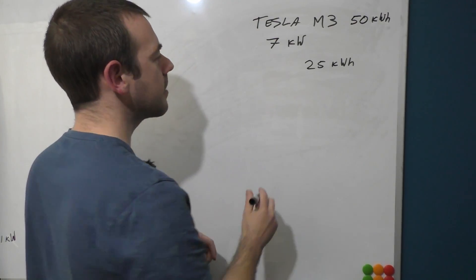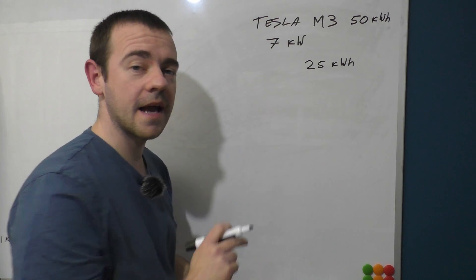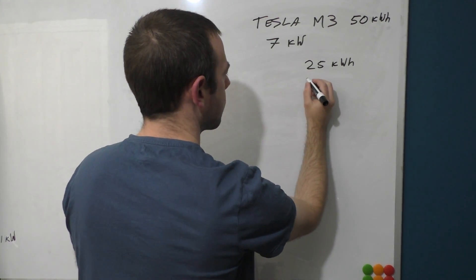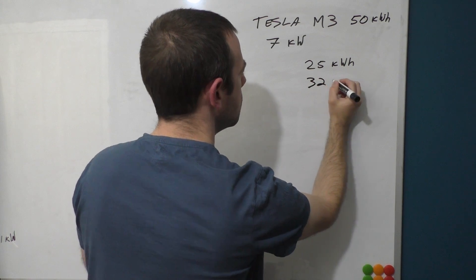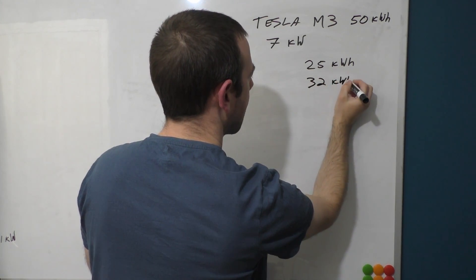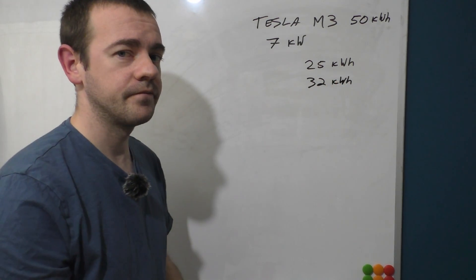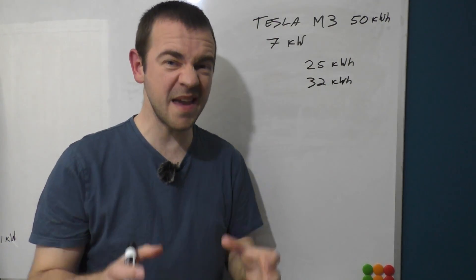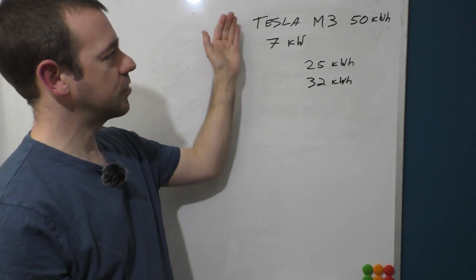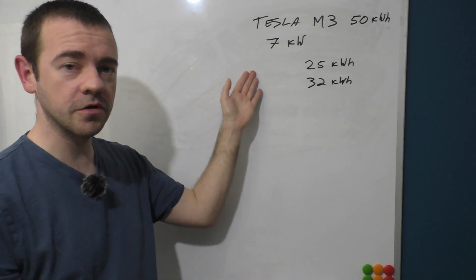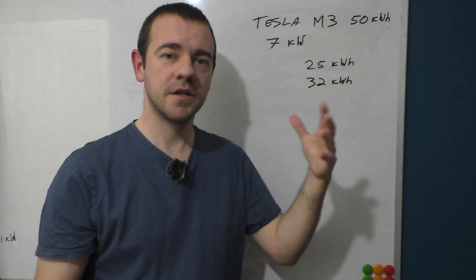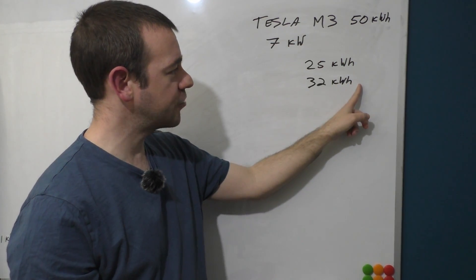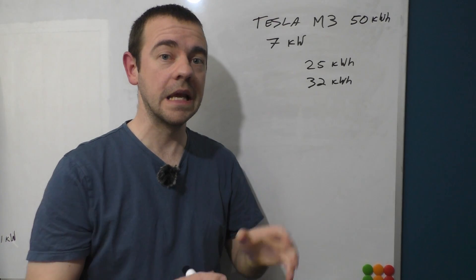Now before anybody mentions it, that means if I plug my car in for exactly one hour, I would end up with 32 kilowatt-hours in my car. If I plugged it in for another hour, I'd end up with 39 and so forth. So that's basically what we mean when we go on about charges, kilowatt-hours, kilowatts. The faster the charger, the higher the kilowatt rating will be. The bigger the battery, the higher the kilowatt-hour rating will be.